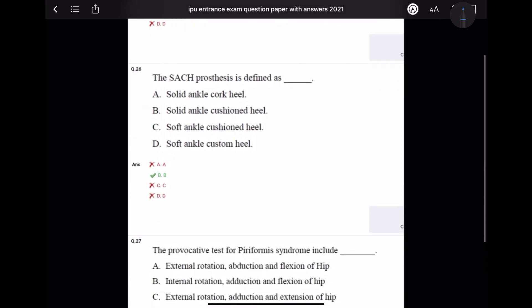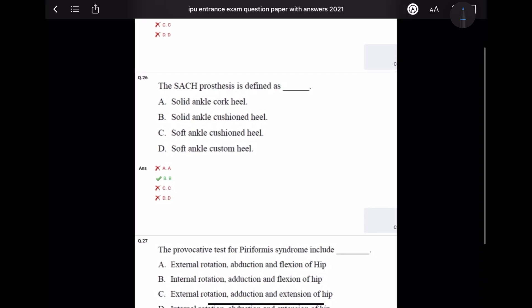Question number 26: The SACH prosthesis is defined as solid ankle cushioned heel. Its full form is solid ankle cushioned heel.